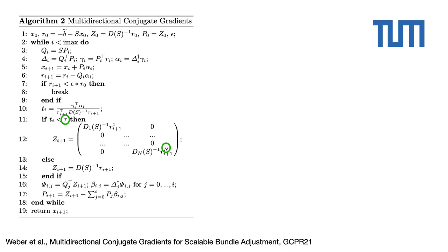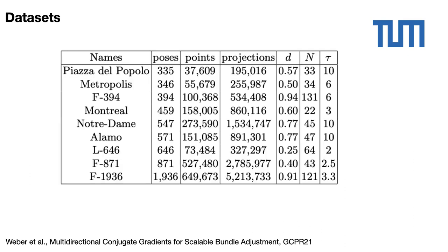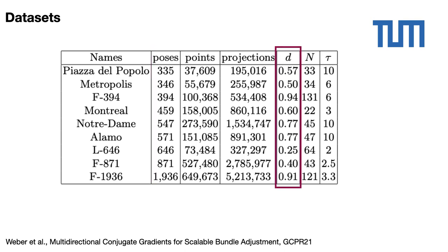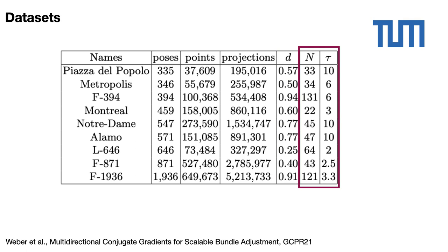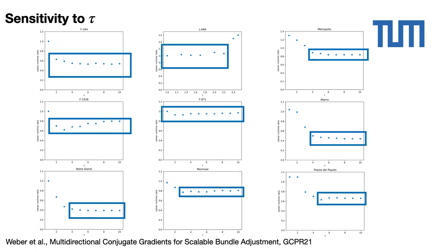Two new hyperparameters have also been added: the TOW coefficient, to discriminate between a PCG step and a multidirectional step, and the number of subsets. For our experimentations, nine datasets with different sizes and heterogeneous Schur matrix densities D have been used. We have arbitrarily chosen values for the number of subsets and for TOW. To analyze the sensitivity of MCG to the hyperparameters, we solve bundle adjustment problems for different values of TOW and for a fixed number of subsets N given in the previous table. For each problem, a wide range of values supplies a good trade-off between the augmented search space and the additional computational cost.